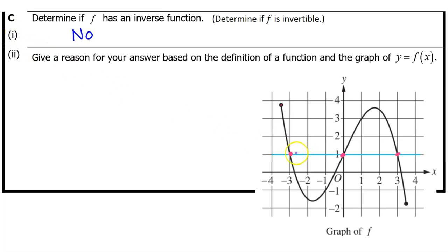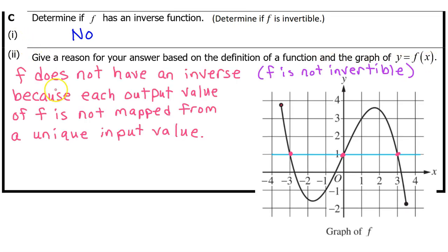However, be very careful. What I just said about failing the horizontal line test cannot be mentioned for C part 2, which says, give a reason for your answer based on the definition of a function and the graph of y equals f of x. AP graders are telling me that they are going to be extremely picky about how this answer is worded.